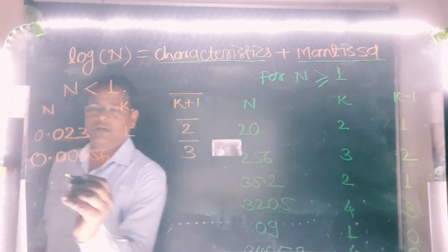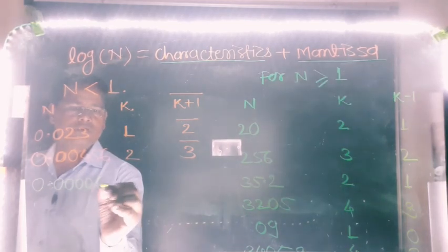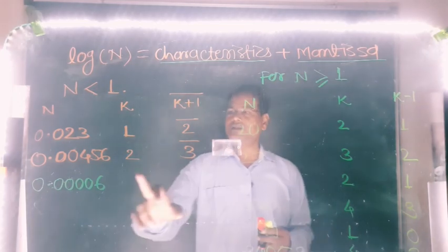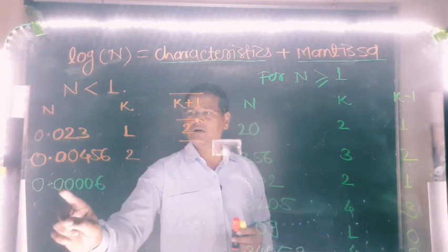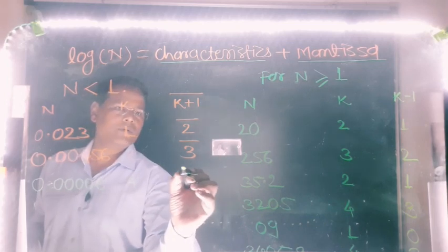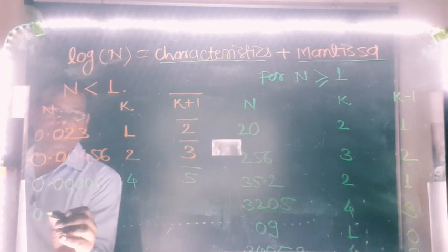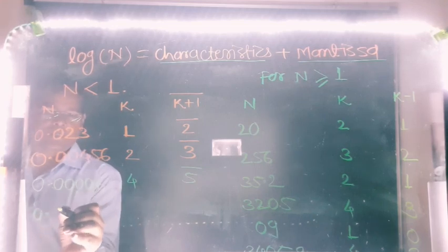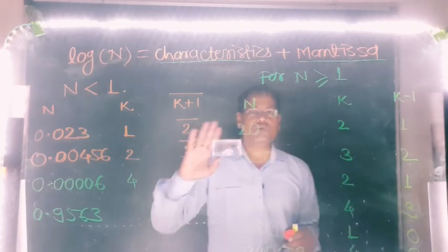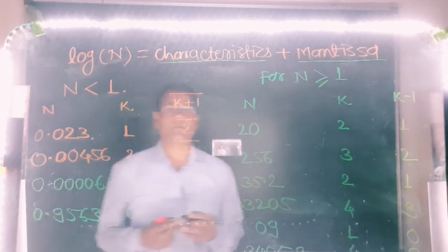Another example: 0.00006. Count the number of zeros after the decimal point until a digit between 1 and 9 occurs — here it is 6. After the decimal point there are zeros: 1, 2, 3, 4. So k equals 4, plus 1 equals 5, characteristics is bar 5. Next example: 0.9563. There is no zero after the decimal point, so number of zeros equals 0, plus 1 equals 1, characteristics is bar 1.